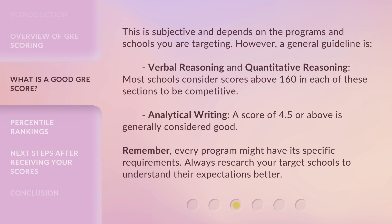What counts as a good score is subjective and depends on the programs and schools you are targeting. However, a general guideline: for verbal reasoning and quantitative reasoning, most schools consider scores above 160 in each section to be competitive. For analytical writing, a score of 4.5 or above is generally considered good. Remember, every program might have its specific requirements — always research your target schools to understand their expectations better.